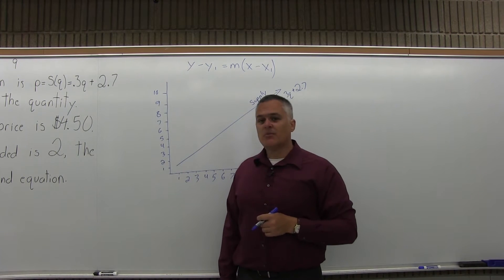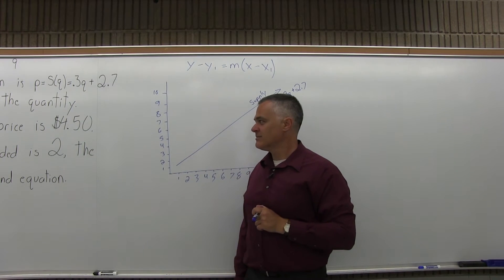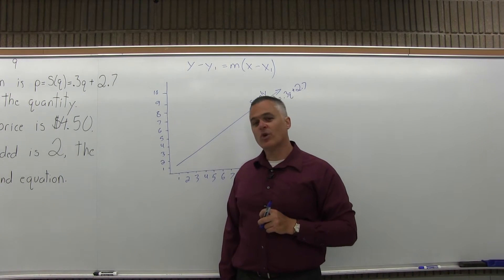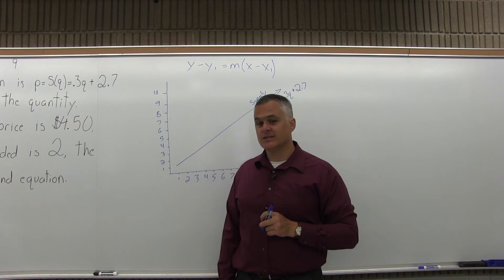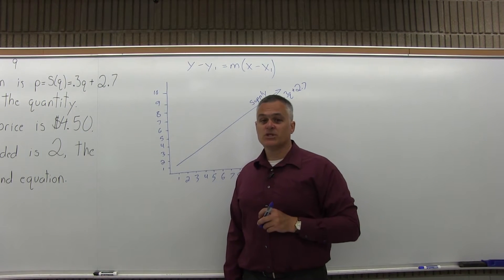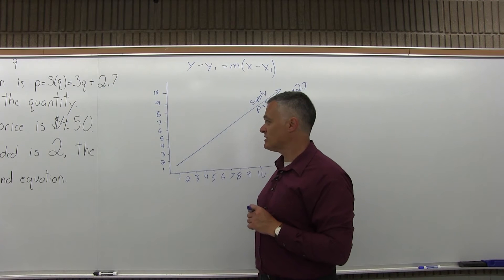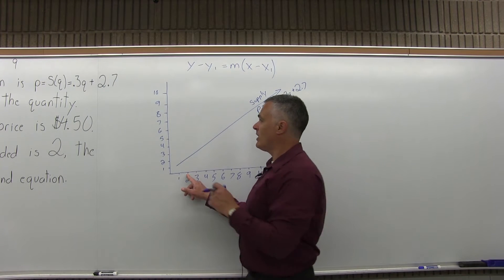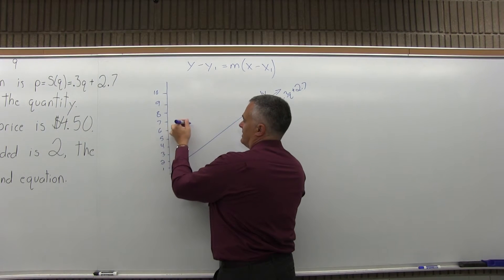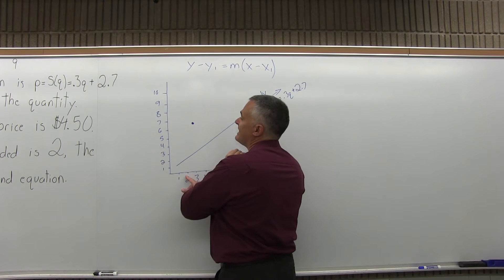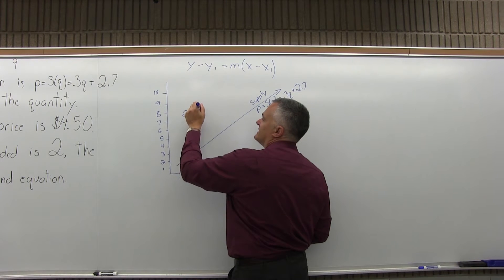The market price is $4.50. Let me come back to that. The next piece of information says when the quantity demanded is 2, the price is $6.10. That piece of information is a point on the demand equation. If we go over 2 for quantity and up 6.10, we have our first point.